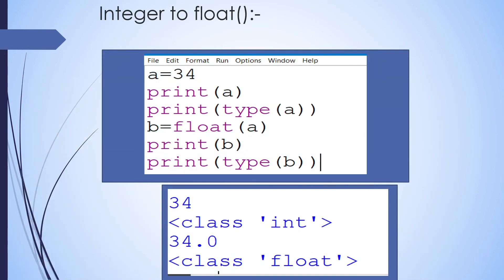Now we see integer to float conversion. Here a = 34, which is an int type. Print a gives 34. To identify the type of the value, we use type(a) — it shows int. Because we want a conversion here from integer to float, before the conversion the value is in int. Now we want to change the value into float.